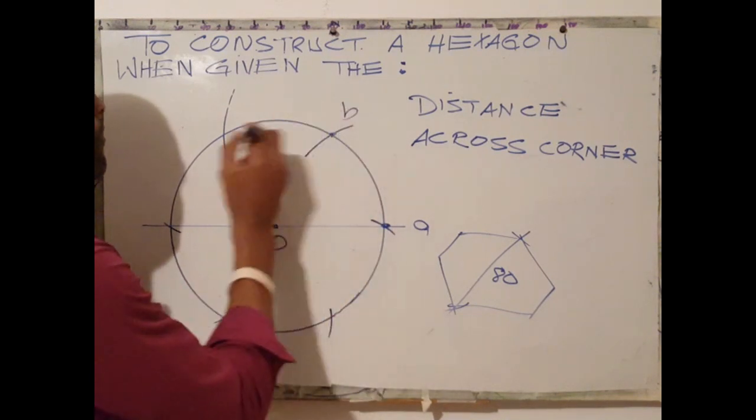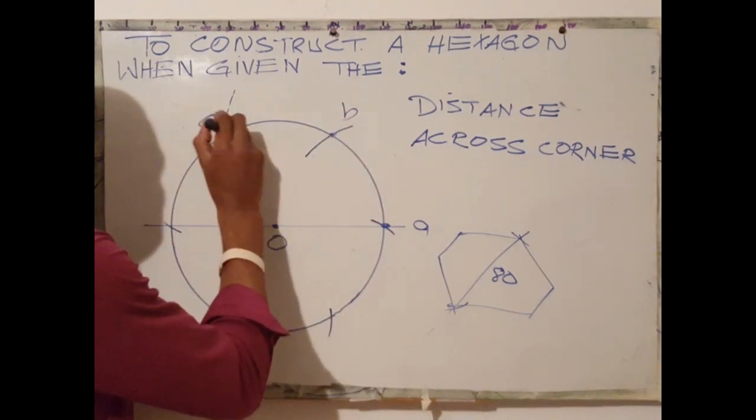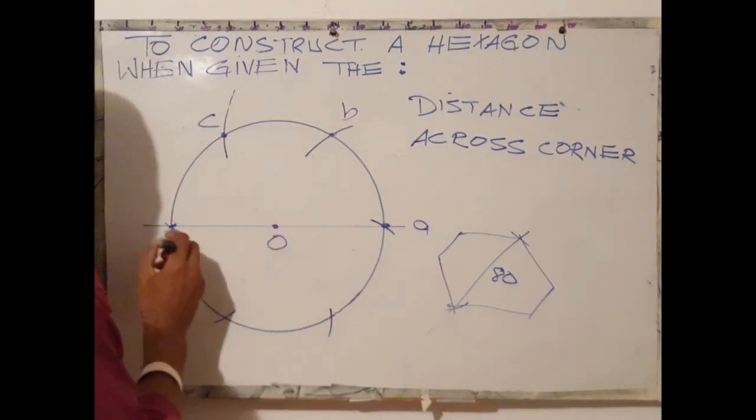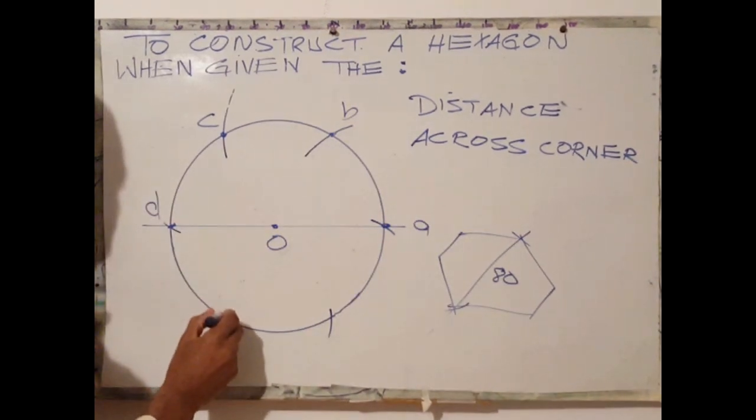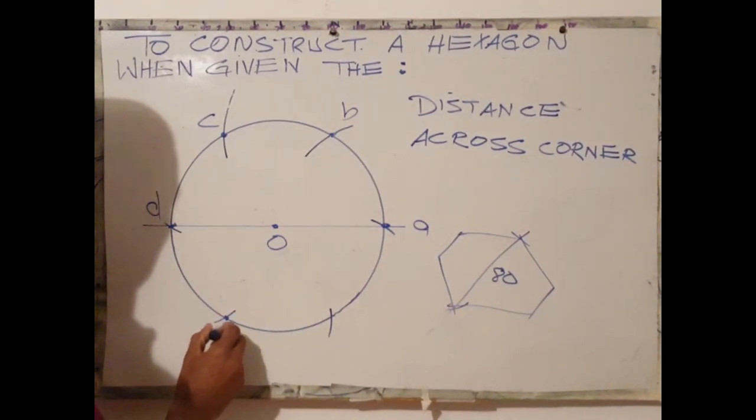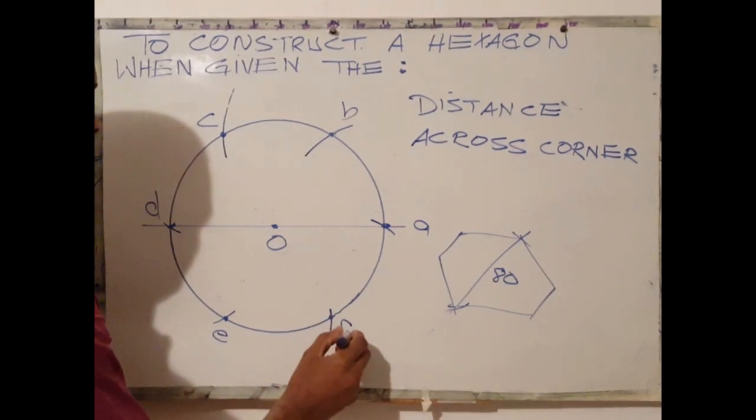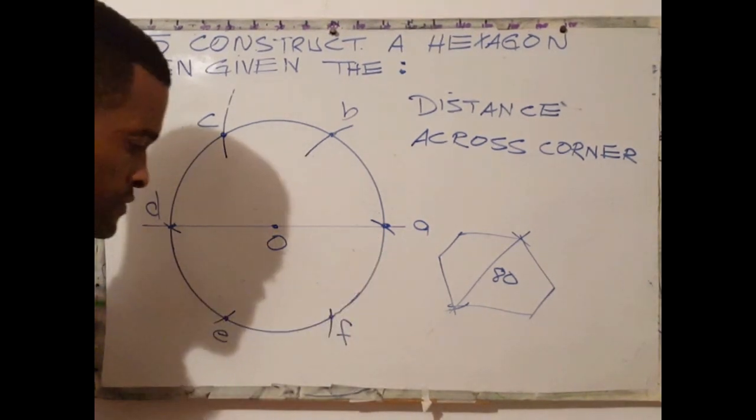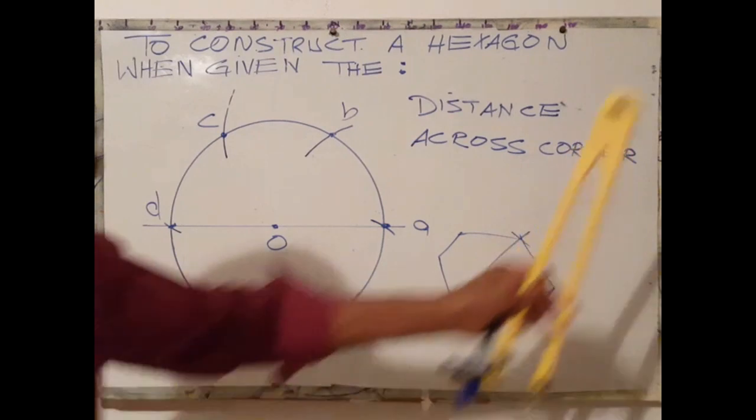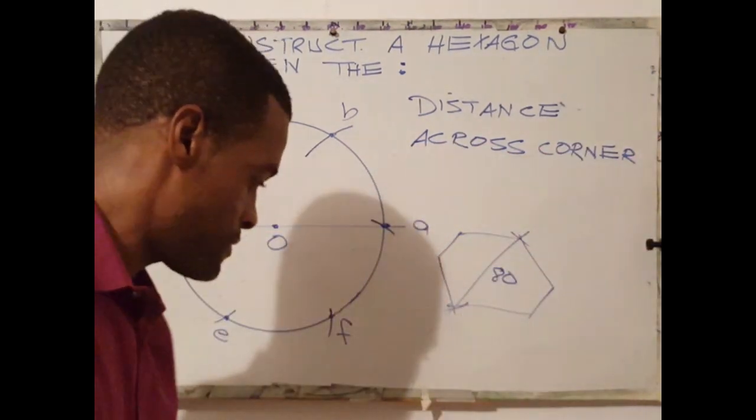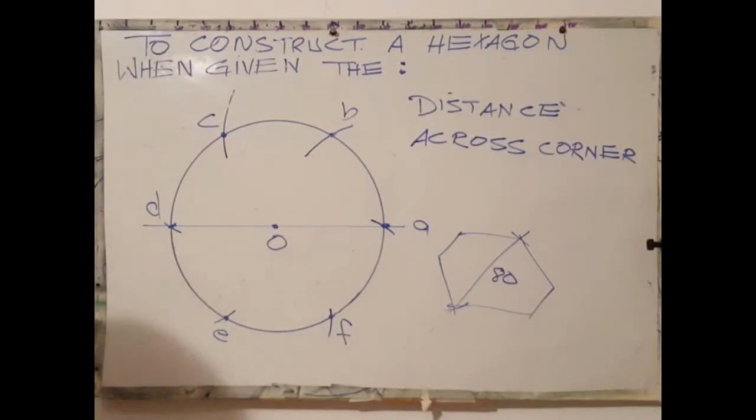The next step is to label the points where each arc meets the circumference. Now that you have done that, the next step is to plot our points.